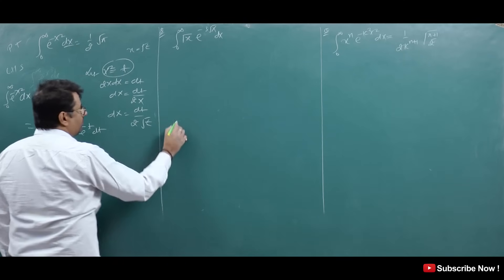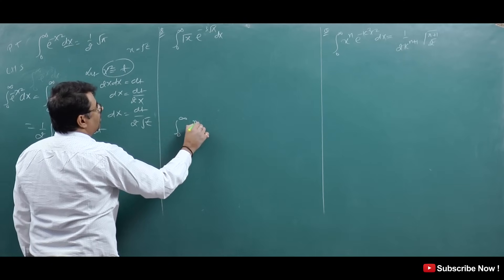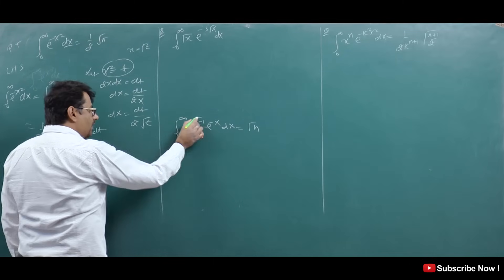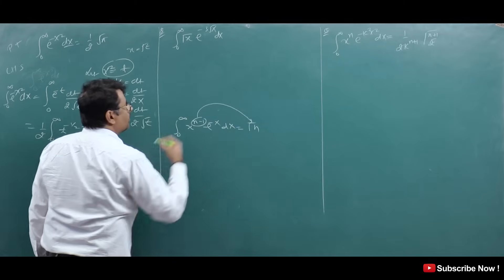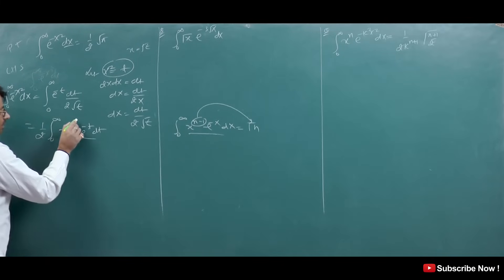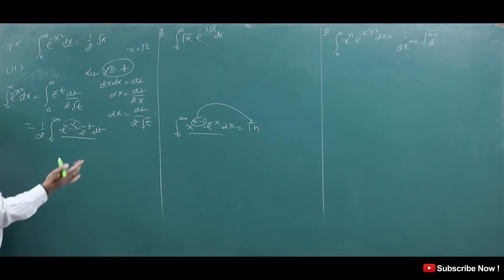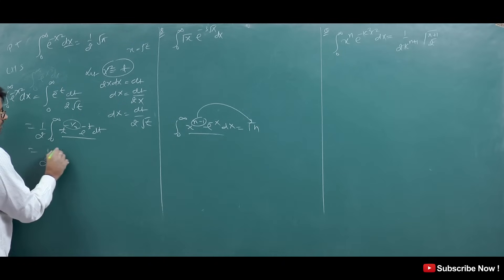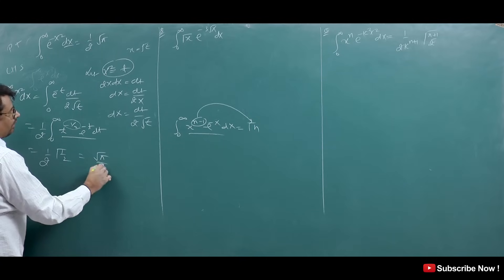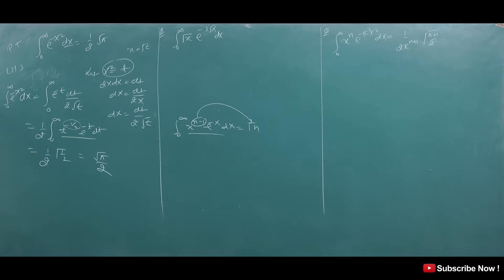Now I remind you: the Gamma function formula is ∫₀^∞ x^(n-1) e^(−x) dx = Γ(n). Here the power on t is −1/2, so adding 1 gives 1/2, meaning this is Gamma(1/2). I had told you that Gamma(1/2) = √π. So the answer is (1/2)·Gamma(1/2) = √π/2. How Gamma(1/2) = √π will be shown in the next video on Beta functions.